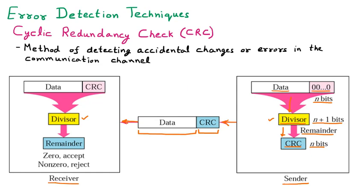At the receiver side, we receive the complete packet — data as well as the CRC. Since the divisor is the same between sender and receiver, the received packet is divided by the divisor. If we get the same remainder as calculated earlier — that is, zero — it is accepted. If it is non-zero, it is rejected, because a correct packet divided by the divisor should yield zero.